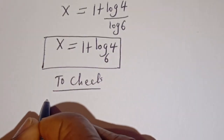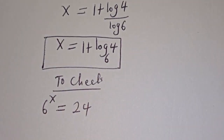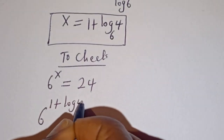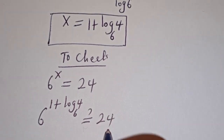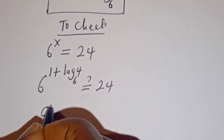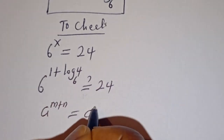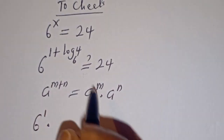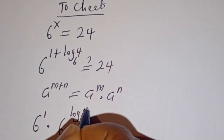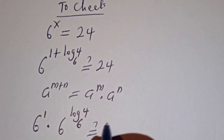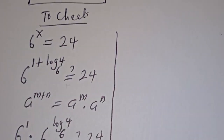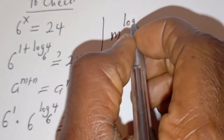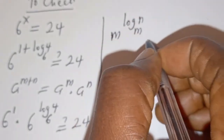To check, we have the given equation: 6 to the power of s is equal to 24. When s is 1 plus log 4 over log 6, we have 6 to the power of 1 plus log 4 over log 6 must equal 24. Take note that a to the power of m plus n equals a to the power of m multiplied by a to the power of n. Also note that m to the power of log_m n is equal to n.